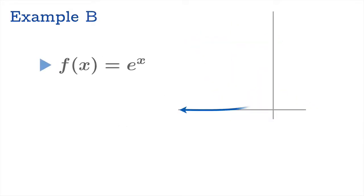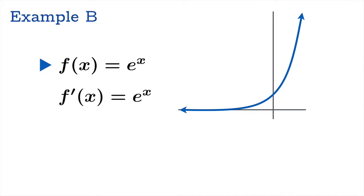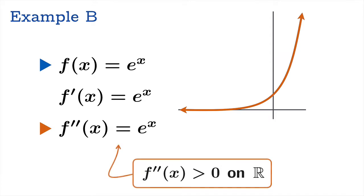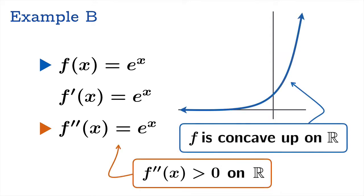Suppose f(x) = eˣ. Then f′ and f″ are both eˣ, and eˣ is always positive. Therefore the original function must be concave up on the whole interval from negative infinity to infinity.